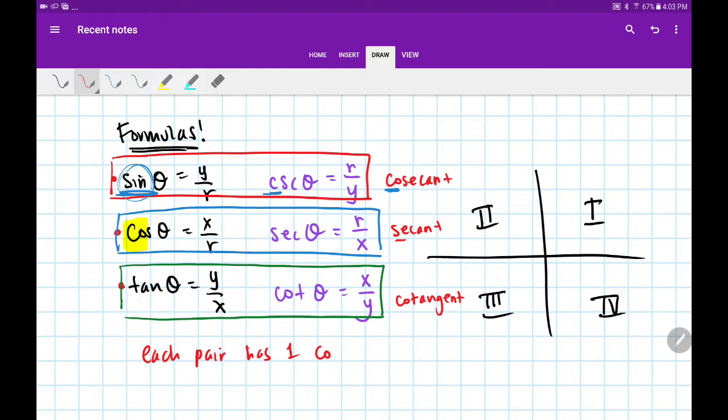In the last one, we have tangent, so naturally we go with cotangent. I'm going to highlight the co's: cosecant, cosine, and cotangent. Just one co per pair.